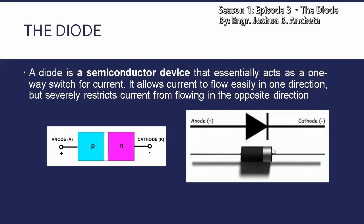Ito yung positive terminal which is the anode, and this is the negative terminal, which is the cathode. Then ang physical appearance niya — naka-cylindrical in shape yan, and then may silver stripe sa isang side para ma-designate o malagyan ng mark yung cathode terminal.